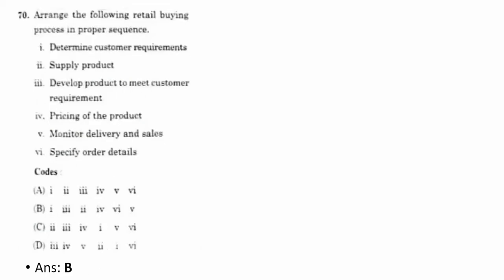Seventieth question: arrange the retailing buying process in proper sequence. The correct option is one, three, two, four, six, five — determine customer requirements, develop product to meet customer requirement, supply product, pricing of the product, specify order details, and monitor delivery and sales. Seventy-first question: the standard deviation of the first n natural numbers is given by √((n² − 1)/12).